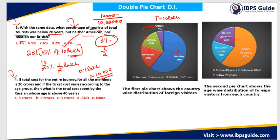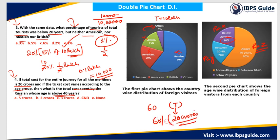Question 4: If the total cost for the entire journey of all members is 20 crores, and the ticket price varies according to the age group — rupees X for below 20 years, rupees Y for 20 to 40 years, and rupees Z for above 40 years — then what is the total cost spent by the Russians whose age is above 40 years? Since the total tourists T are spending 20 crores, I can find the Russian share. But for above 40 years, I don't know the value of Z. So I cannot exactly determine this value. The answer is: cannot be determined.